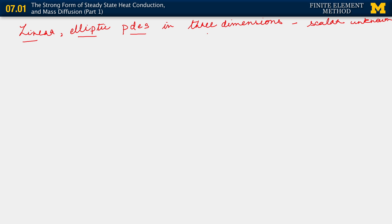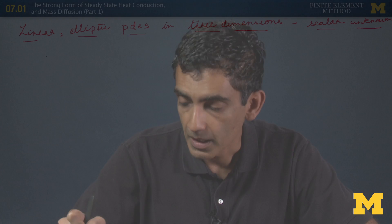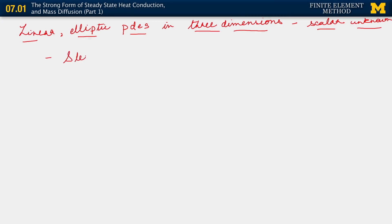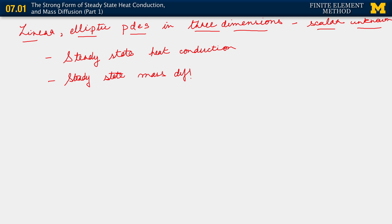So we're looking at linear elliptic PDEs in three dimensions with a scalar unknown. The canonical physical problems described by this sort of PDE include steady-state heat conduction and, also at steady state, the mass diffusion problem.